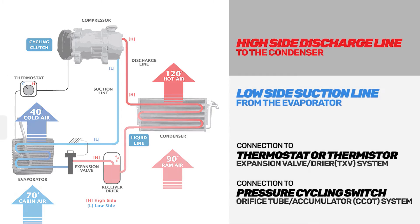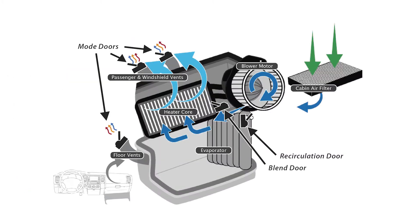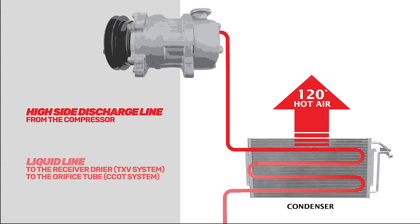When refrigerant travels to the evaporator, it absorbs hot air from the cabin's interior. At the condenser, the refrigerant, which is now a vapor, is compressed and forced through the condenser, turning into a liquid and releasing the heat previously absorbed from the evaporator.